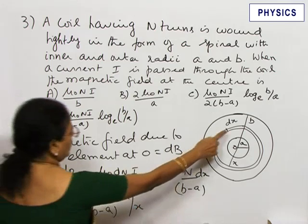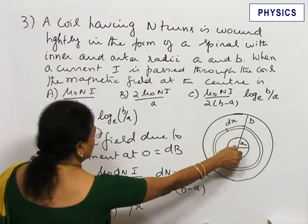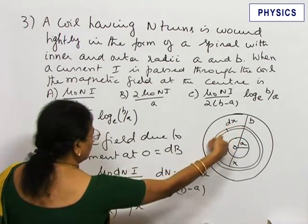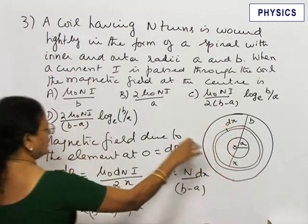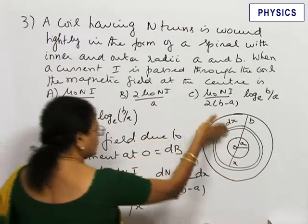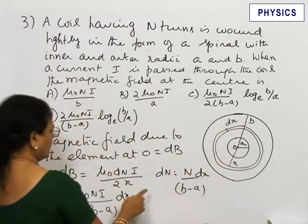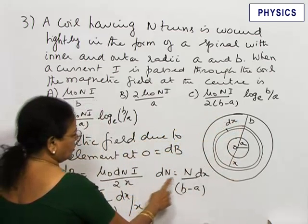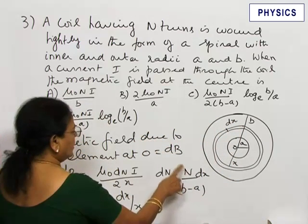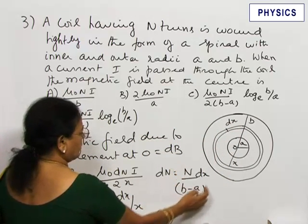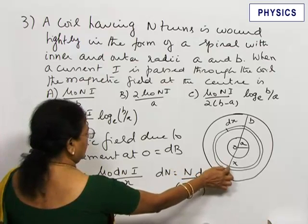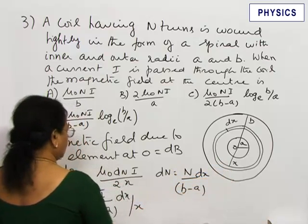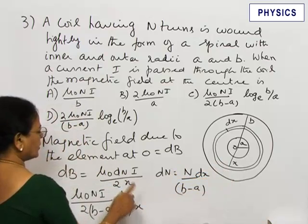Considering a small element at a distance x from the center having thickness dx, the number of turns in this section per unit length is given by dn, which equals n by B minus A (number of turns per unit length) multiplied by the length of this section or thickness dx, and the radius of this section is x.